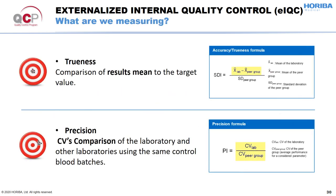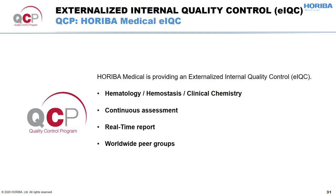What are we measuring? The trueness and the precision. The trueness is calculated by the standard deviation index, or SDI, comparing the monthly mean of the laboratory with the peer group mean. The precision index, or PI, will compare the CV of the laboratory with that of the peer group. Horiba Medical is providing its own externalized IQC, the QCP. It is available for all three disciplines — hematology, hemostasis, and clinical chemistry — and allows access to real-time reports.